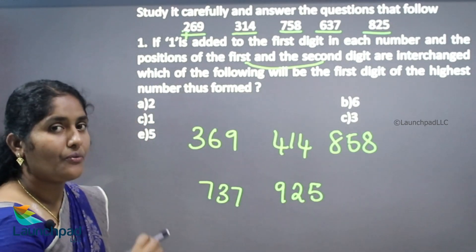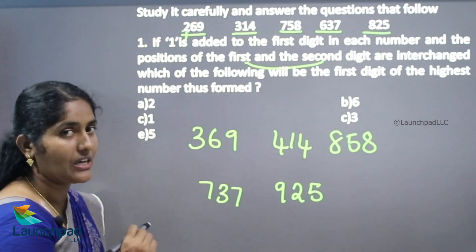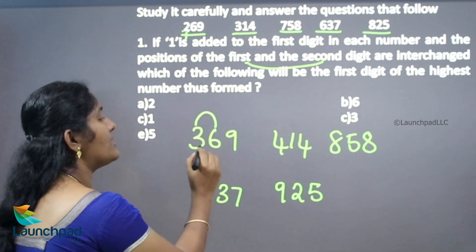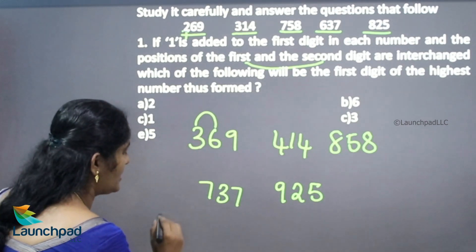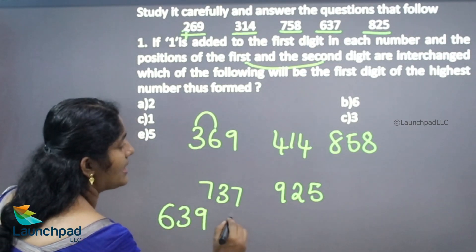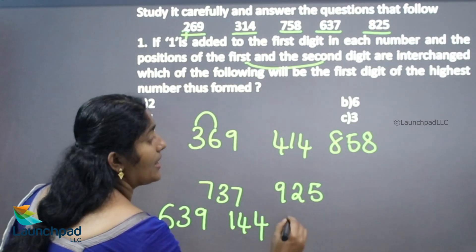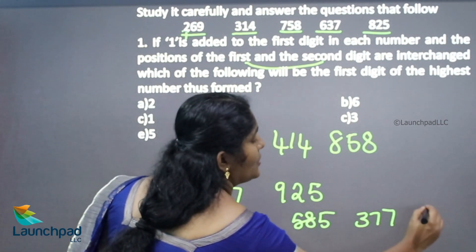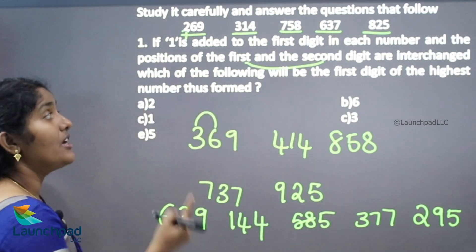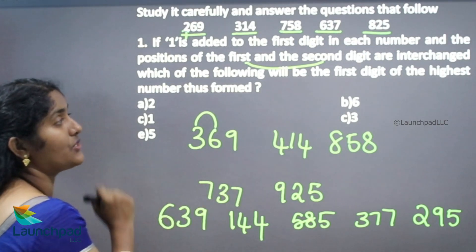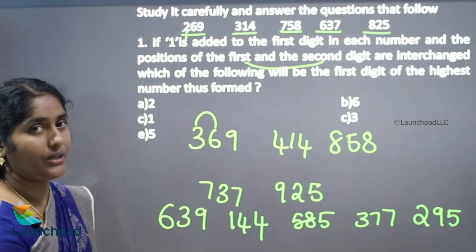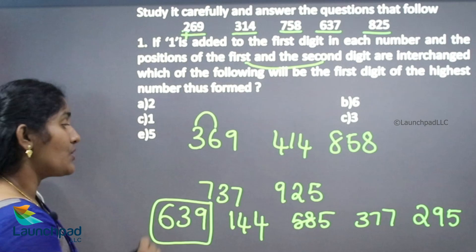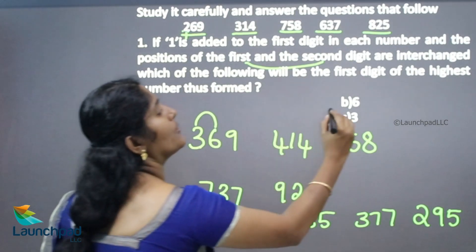Now we have added 1 to each first digit. Next we interchange the first and second digits: 369 becomes 639, 414 becomes 144, 858 becomes 585, 737 becomes 373, and 925 becomes 952. The question asks for the first digit of the highest number. The highest number is 639, and its first digit is 6. So your answer is option B.